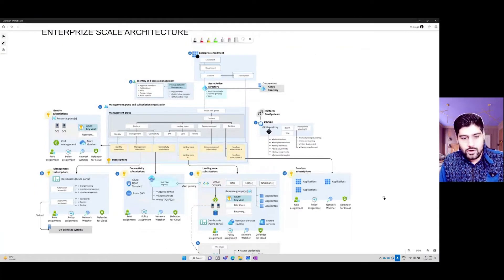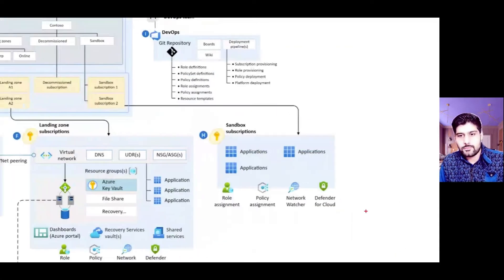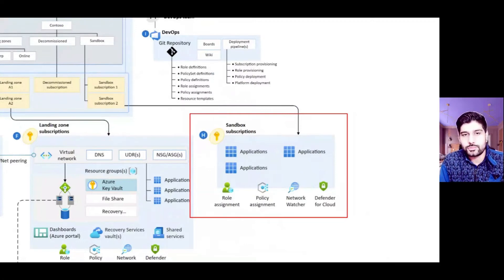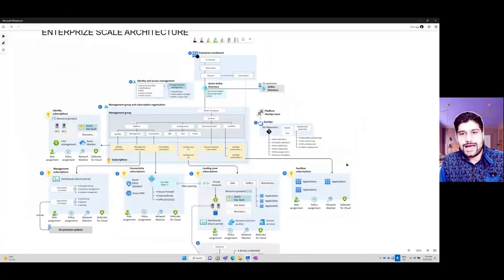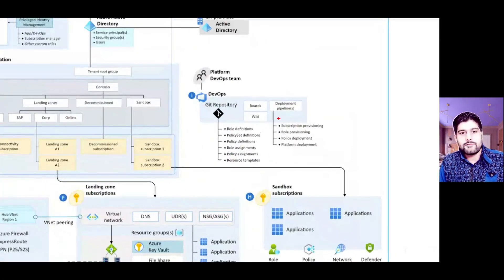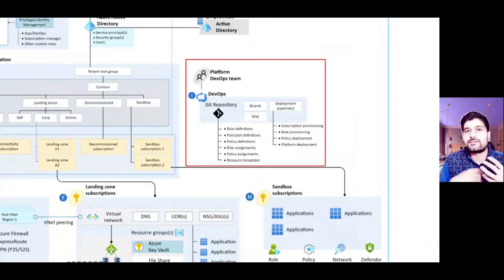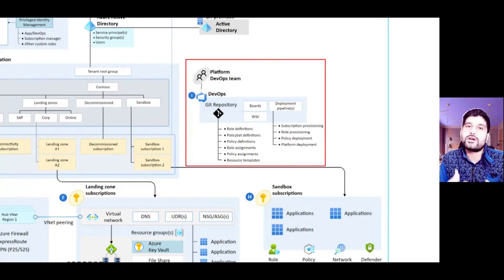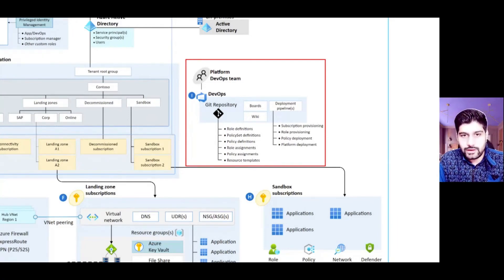You also have a sandbox module which helps you test out features before you actually deploy them to production. You also have a DevOps area where you can create continuous integration and continuous deployment pipelines. This modular design of a landing zone is what helps you configure all of these things very quickly.